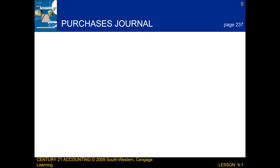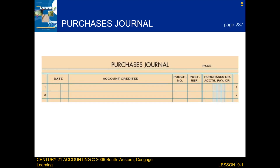Next we're going to be talking about a purchases journal. What we're essentially looking at here is a purchases journal. This is where we put the page number, the date, the vendor name, the purchase number, and the post reference. Then we record the amount in the Purchases Debit/Accounts Payable Credit column. What the special amount column means is that when we post the amount to a subsidiary ledger, it would be recorded as a debit to Purchases and a credit to Accounts Payable.